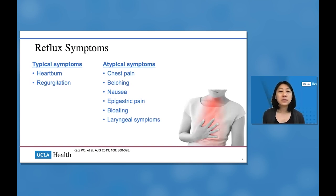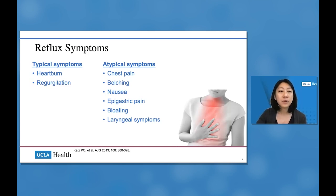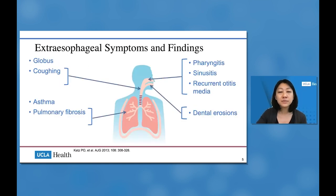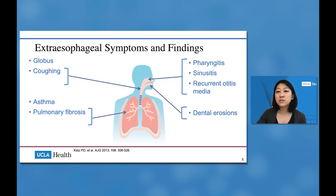Typical symptoms of acid reflux include heartburn and regurgitation. Atypical symptoms can include chest pain, belching, nausea, epigastric pain, bloating, or laryngeal symptoms. There are also extraesophageal symptoms and findings that can happen in GERD, including globus, coughing, asthma, pulmonary fibrosis, pharyngitis, sinusitis, recurrent otitis media, and dental erosions.